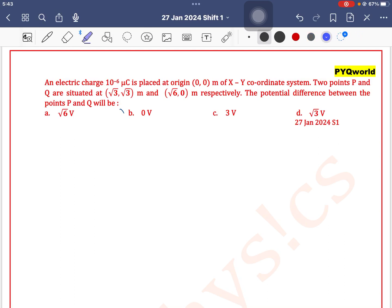An electric charge of 10 to the power minus 6 micro coulomb is placed at origin (0,0). So at origin we have a charge 10 to the power minus 6 micro coulomb of an XY coordinate system.